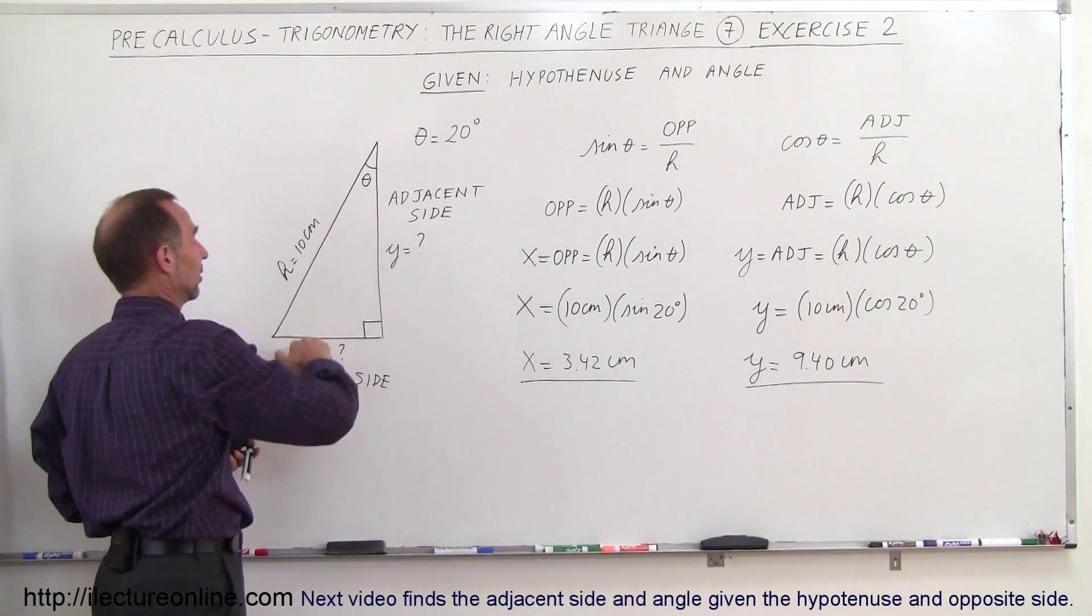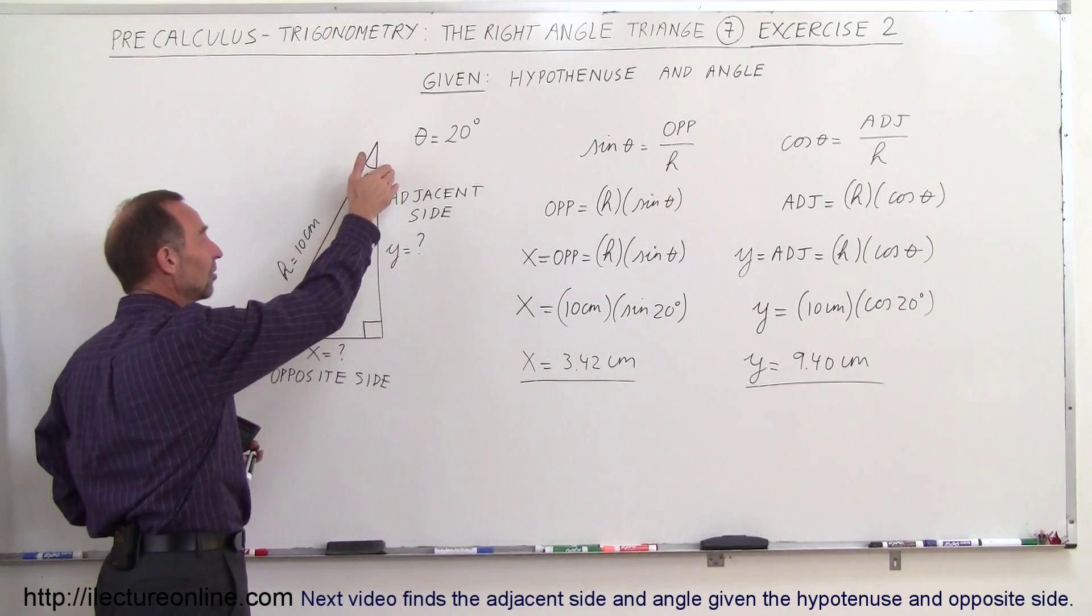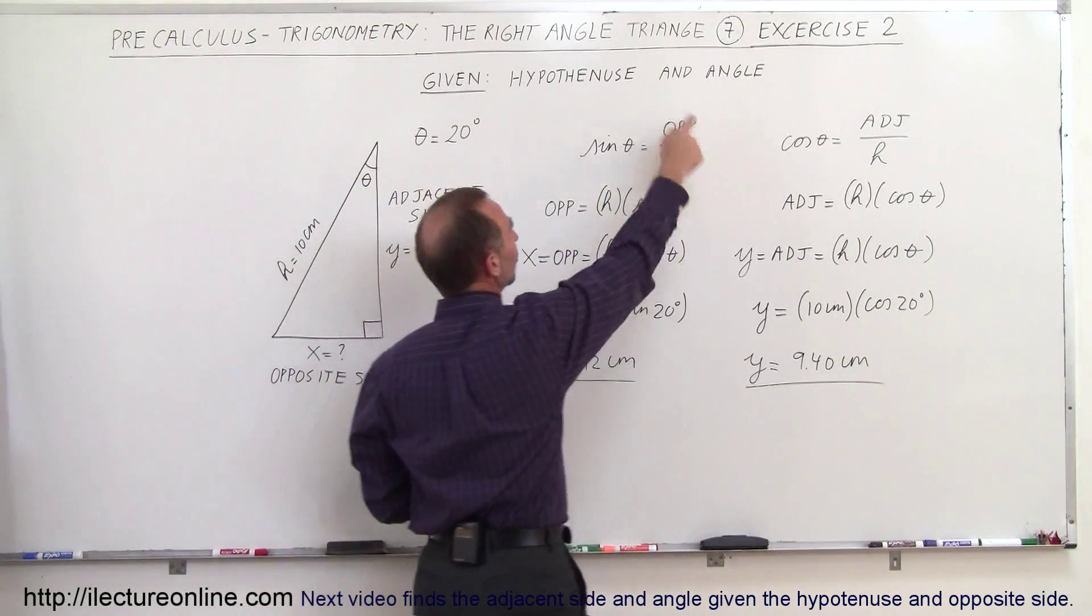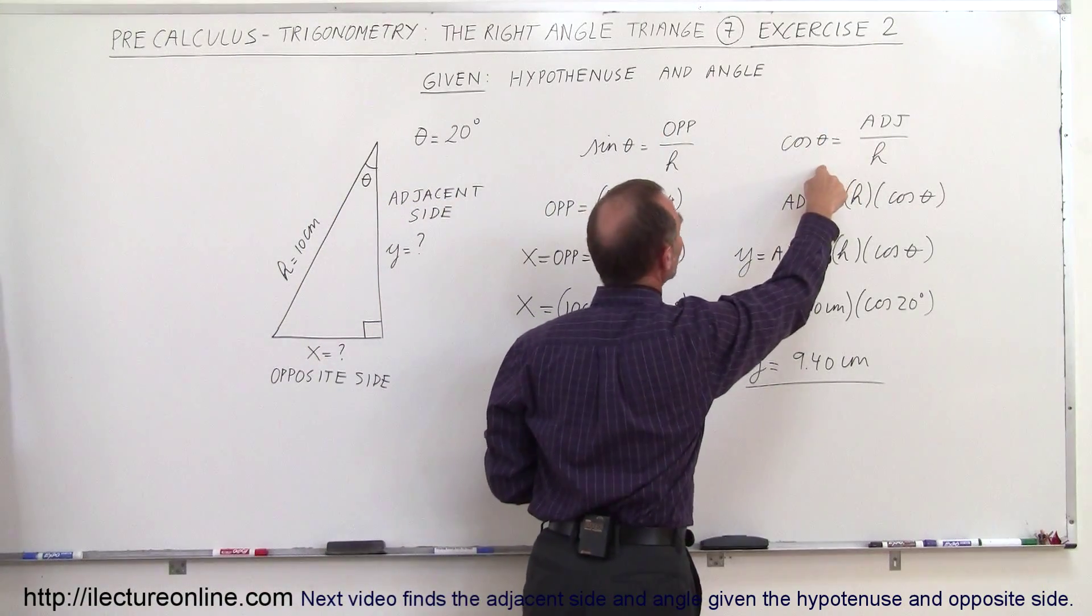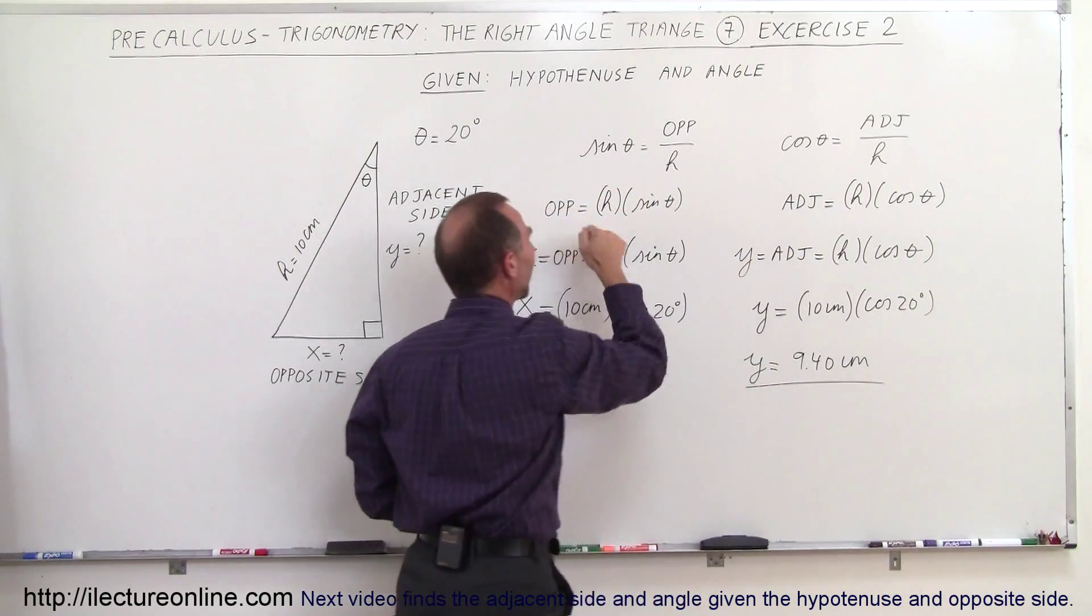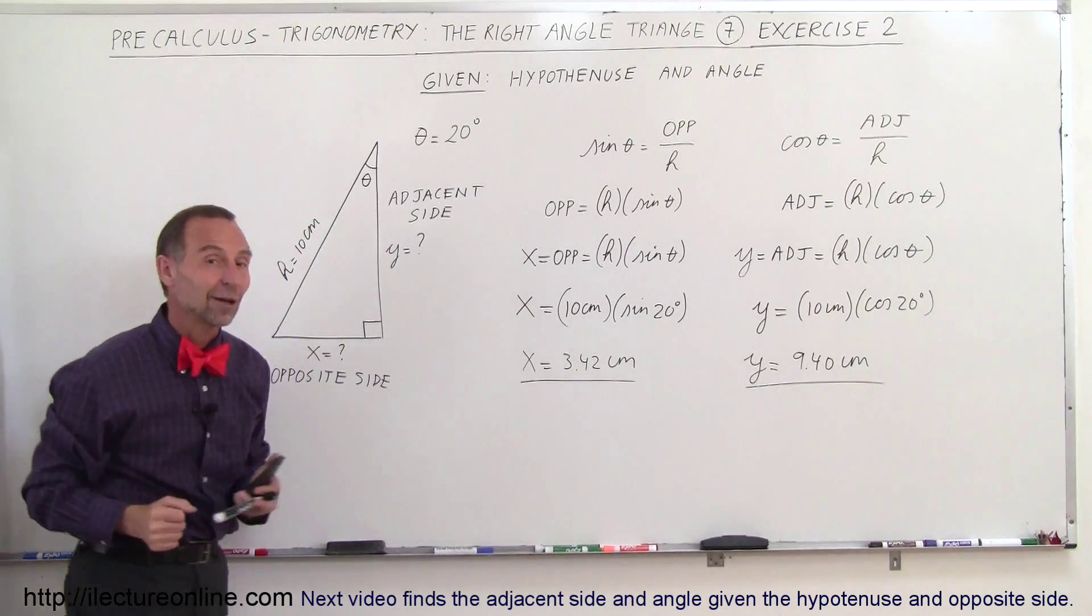Label the sides. Opposite side to the angle, adjacent side to the angle so you can associate what y means and what x means. Then write the definitions of the trigonometric functions, solve for the side that you're looking for and then plug in the correct numbers. That's how you do it correctly.